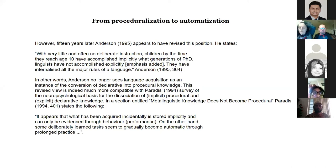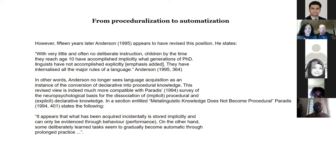After 15 years, Anderson appears to have revised this position, stating: with very little and often no deliberate instruction, children by the time they reach age 8-10 have accomplished implicitly what generations of PhD linguists have not accomplished explicitly — they have internalized all the major rules of a language. In other words, Anderson no longer sees language acquisition as an instance of the conversion of declarative into procedural knowledge. This revised view is much more compatible with Michael Paradis's survey of the neuropsychological basis for the dissociation of implicit procedural and explicit declarative knowledge.